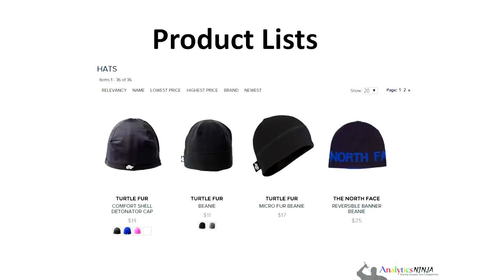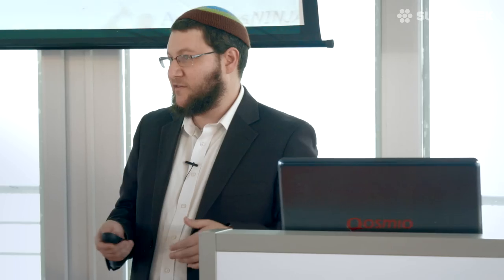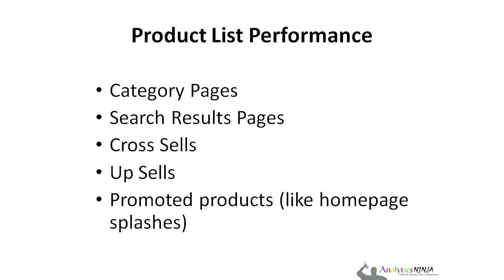There are a number of different types of reports and information. We're going to start with something called product lists. Product lists are ways to understand displays of lots of different types of products. Imagine you walk into a store and you see different departments and a different selection — that could be a category page, your search results pages, cross-sells and upsells, recommended products, or promoted products on the homepage.